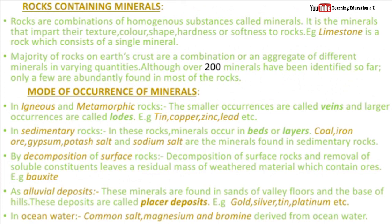Our next topic is rocks containing minerals. Rocks, as you know, are combinations of minerals. Minerals have properties such as color, texture, shape, hardness or softness. Rocks are found in combination or aggregation. There are now around 2,000 identified minerals found in a single rock. These minerals are very important.